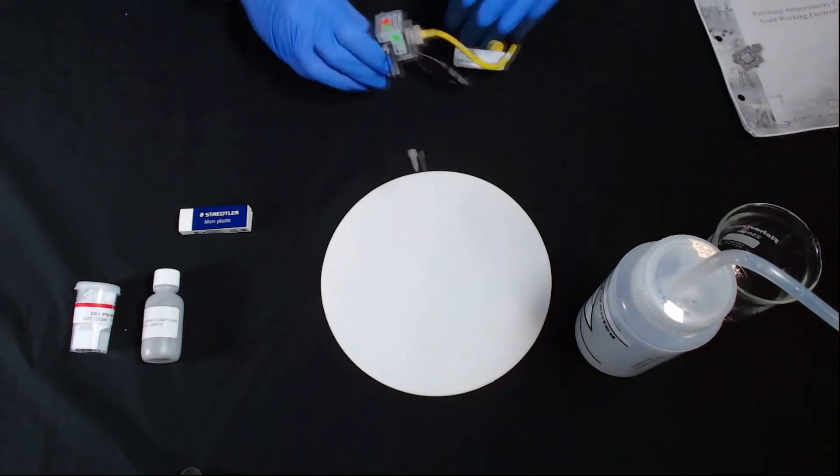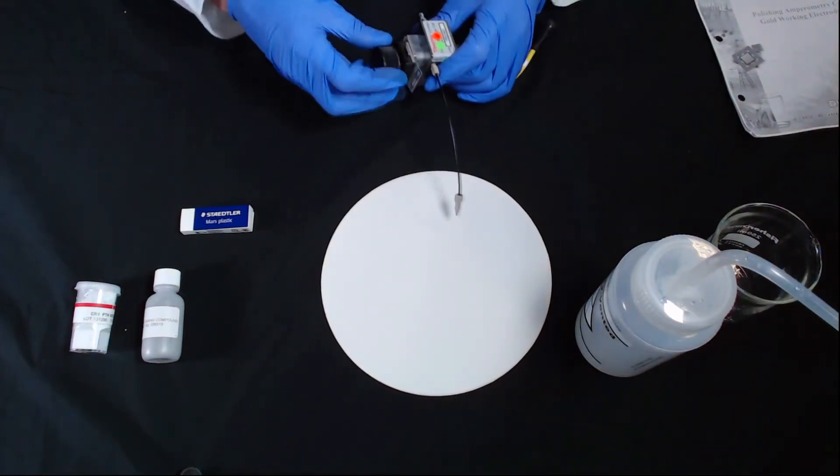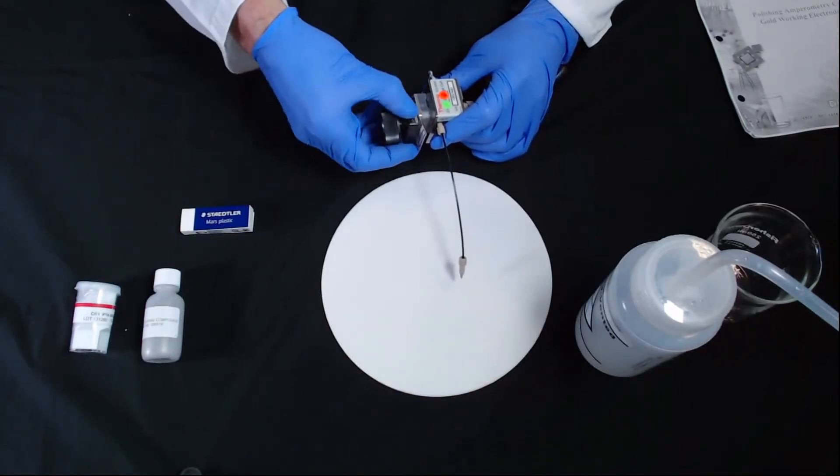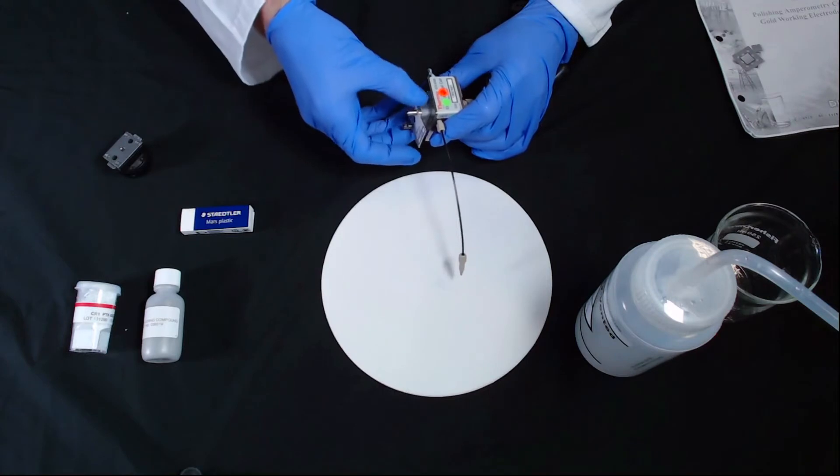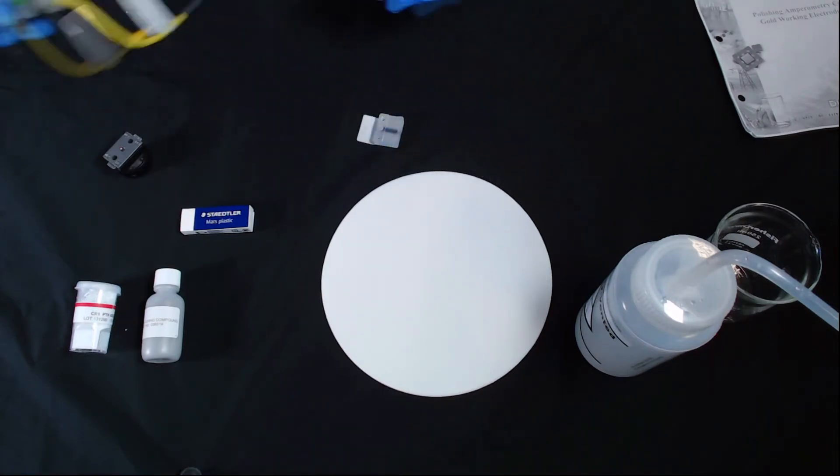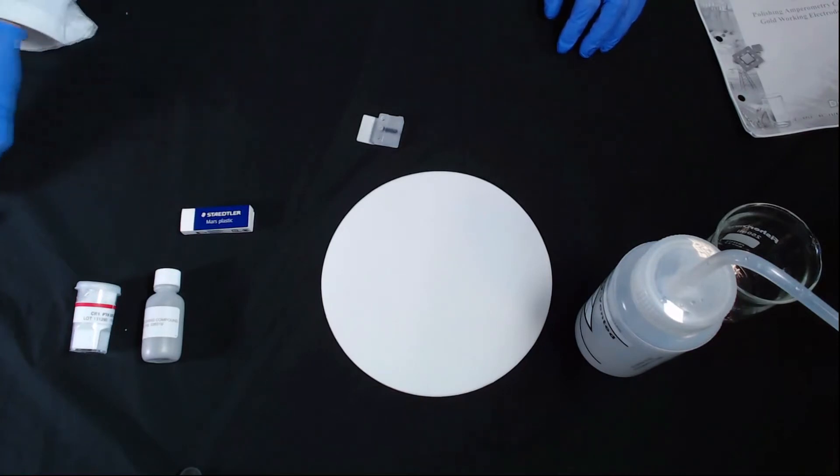To get it polished, first we need to disassemble the cell. We're going to remove the yoke knob and take the working electrode off. I'll put the cell out of the way.